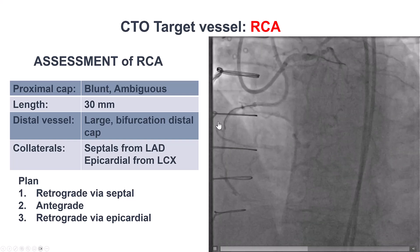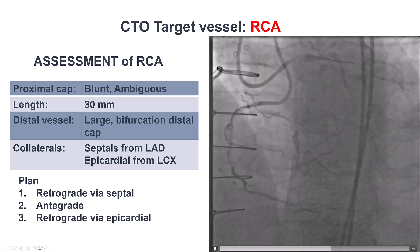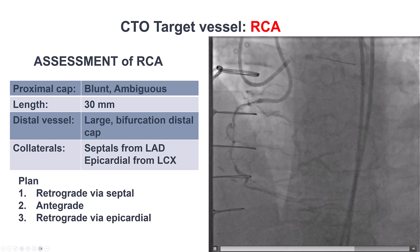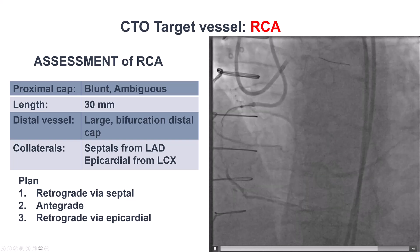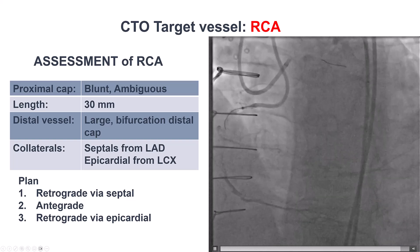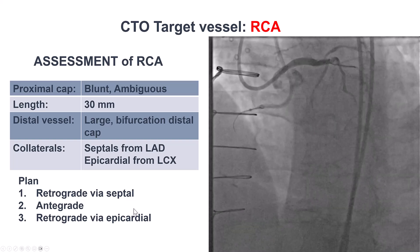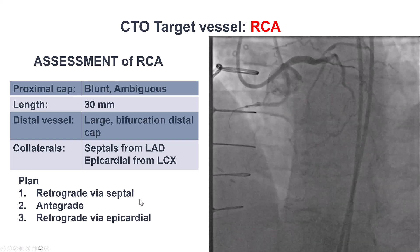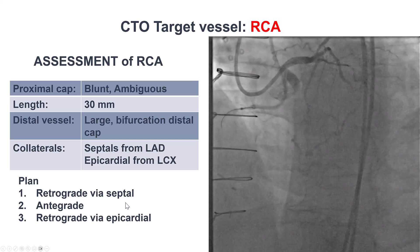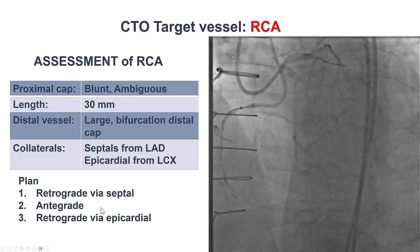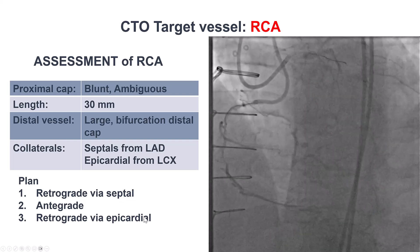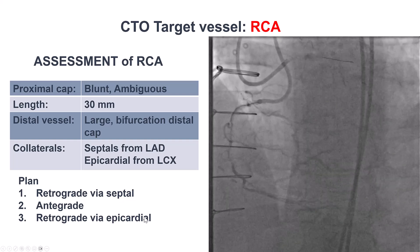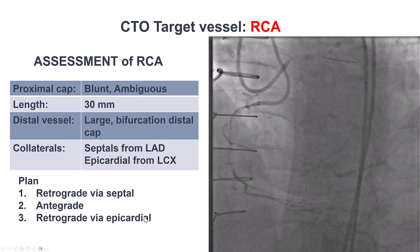The vessel was filling through both septals as well as an epicardial collateral from the circumflex. Our plan, given the ambiguity, was to try to cross retrogradely through a septal antegradely, and then leave the epicardial retrograde as the last resort.